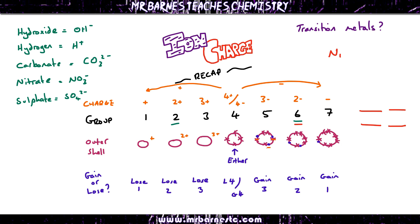Looking at another example — nickel chloride. Chlorine is in group 7, so its charge is −1. There are 2 chlorines, giving a total charge of 2−. Therefore my 1 nickel must be 2+, so it's Ni²+.